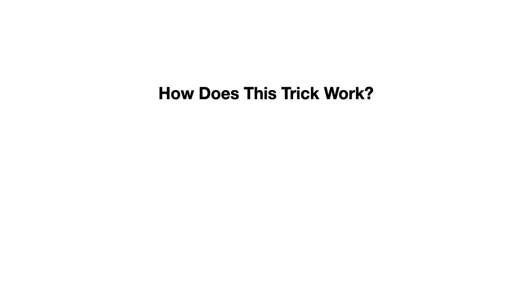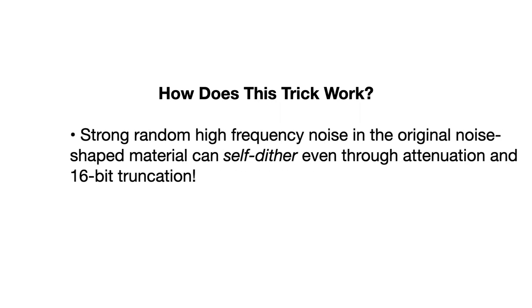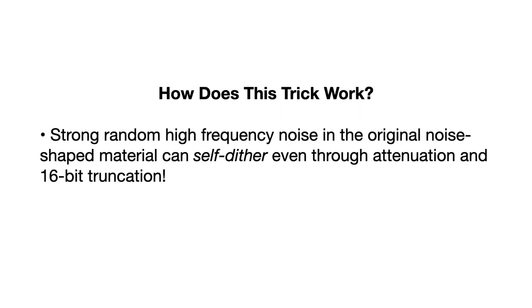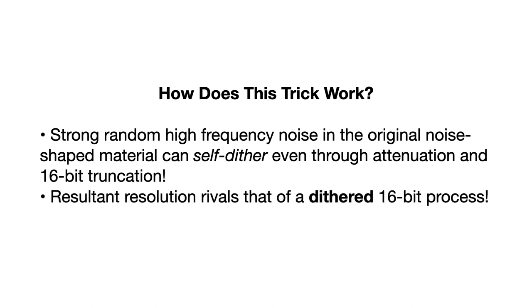How does this trick work? The answer: strong, random, high-frequency noise in the original noise-shaped material can self-dither, even through attenuation and 16-bit truncation. The resultant resolution rivals that of a dithered 16-bit process.